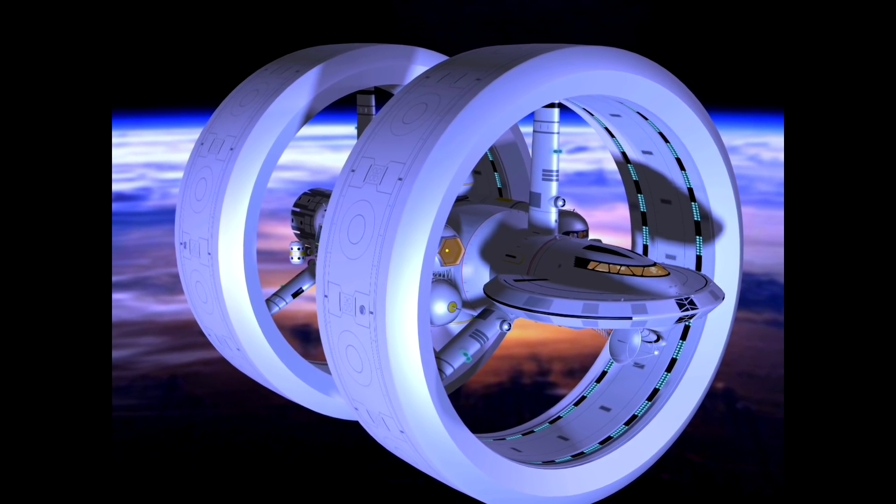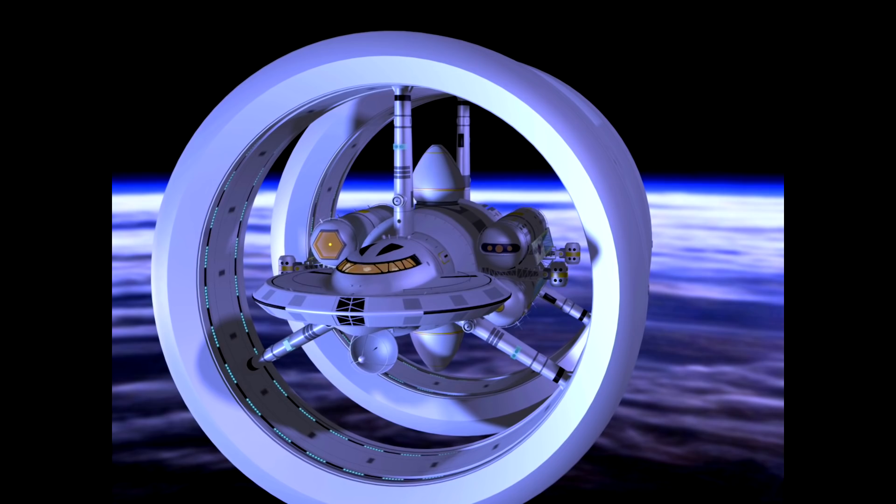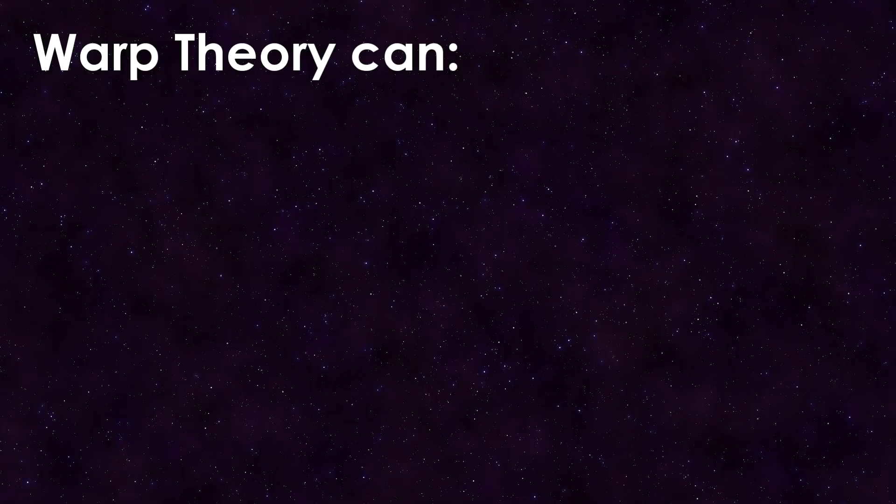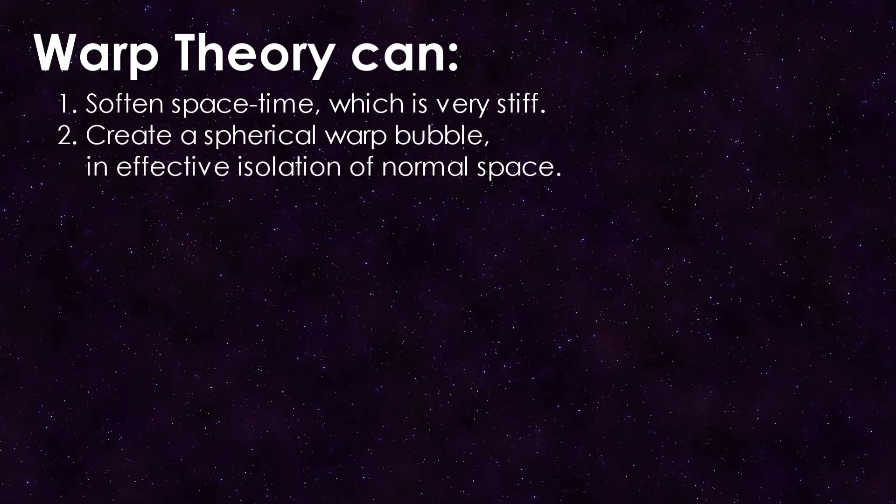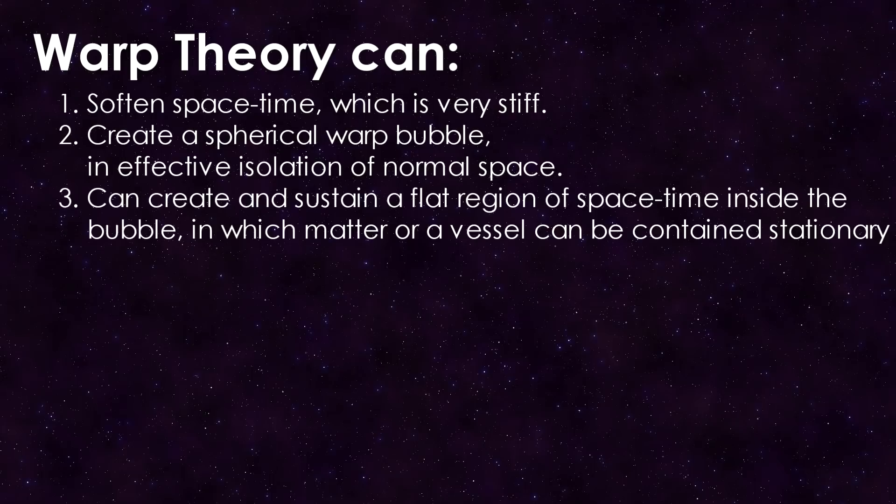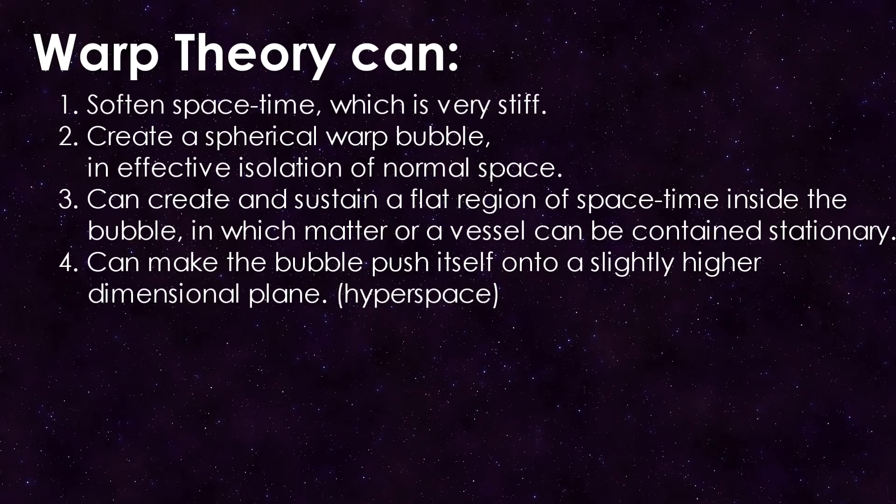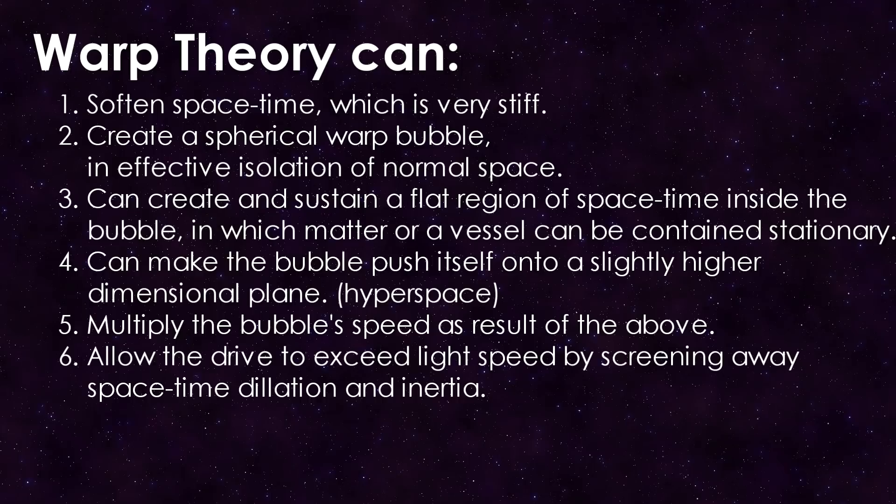Where the original Alcubierre drive was impractical and uncontrollable, White's revision drive was bordering the limits of possibility and very much controllable. In theory, we can now create a warp field that: 1. Softens spacetime, which is very stiff. 2. Creates a spherical shaped warp bubble, effectively separating the inside from the outside of space. 3. Can create a flat region of spacetime inside the bubble, in which matter or a spaceship can be held still in its local spacetime frame of reference, that is inside the bubble. 4. Make the bubble push itself into a slightly higher dimensional spacetime, a hyperdrive. 5. Multiply the bubble speed as a result of the above. 6. Allow the drive to exceed light speed by screening away spacetime dilation and inertia. And 7. Do this with only dozens of kilograms worth of negative energy.